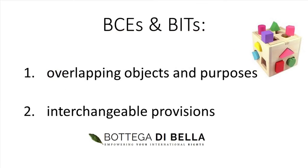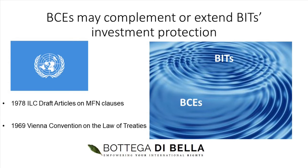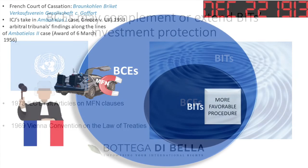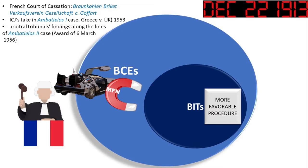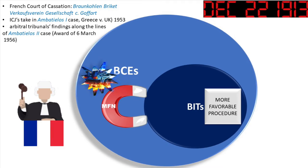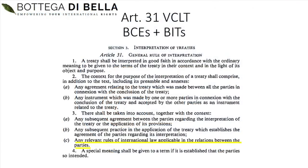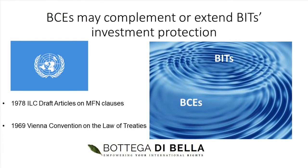Having overlapping objects and purposes as well as interchangeable provisions with existing BITs, BCEs were and remain relevant for the protection of foreign investments to the extent that they were still in force or not expressly superseded by other BITs. Overlooked or forgotten by contemporary literature and arbitral practice, these ante-litteram BITs may come into play either by operation of the Most Favored Nation Clause (MFN Clause) or by virtue of Article 31.3(c) of the Vienna Convention on the Law of Treaties. Namely, BCEs could be used in conjunction with BITs to supplement or extend the investment protection provided by the latter.